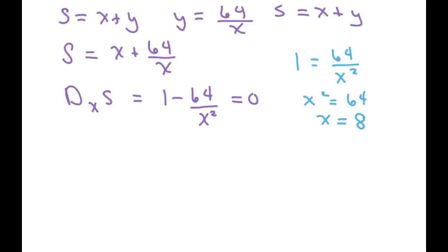Now, if X is 8, I go back to here. I'm going to substitute that back into this equation with Y equals 64 over 8. So Y equals 8. So my two numbers are 8 and 8.